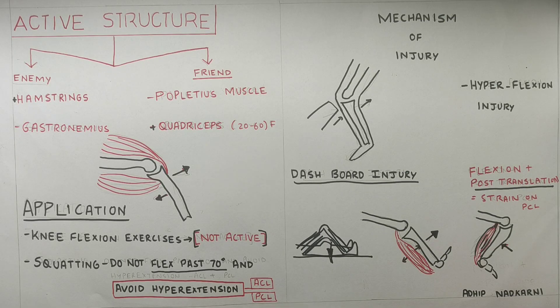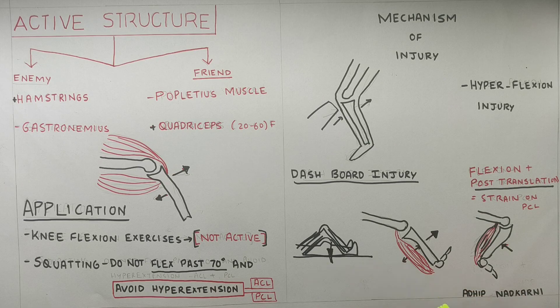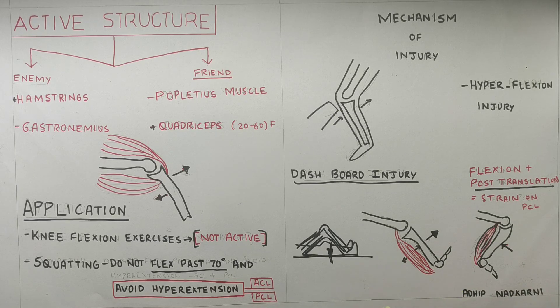To summarize, we talked about the attachment of the posterior cruciate ligament, its primary and secondary restraint, the active structures which cause and prevent posterior translation of the tibia, and the mechanism of injury of PCL. Under application, we talked about the basic treatment and do's and don'ts of PCL injury. If you like my content, please share it with your friends, hit the subscribe button, and let me know in the comments what other videos you would like me to cover. Thank you for watching.